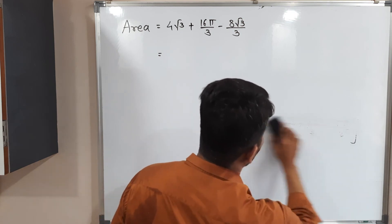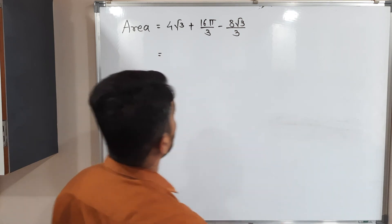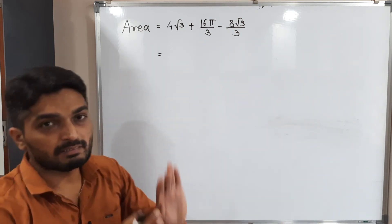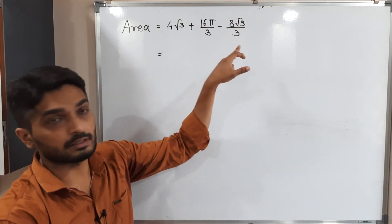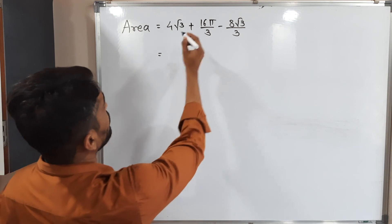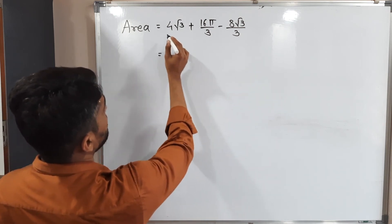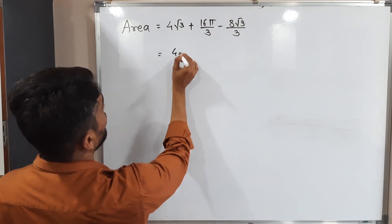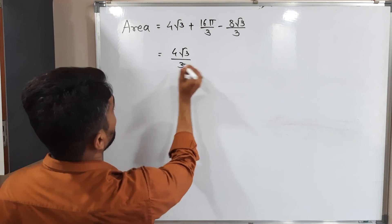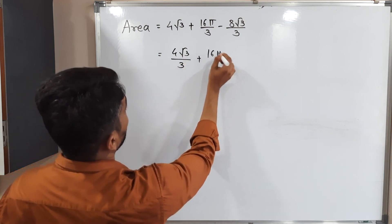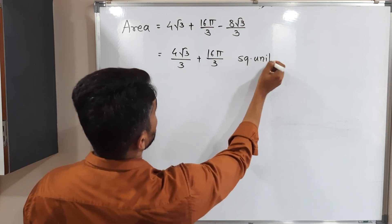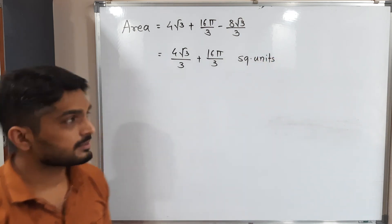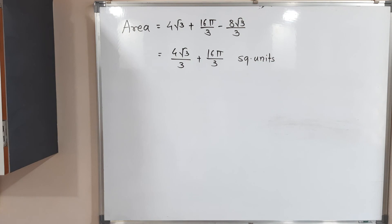Keeping 16π/3 aside and combining 4√3 - 8√3/3: cross-multiplying gives (12√3 - 8√3)/3 = 4√3/3. Therefore the final answer is 4√3/3 + 16π/3 square units. This is the required area.